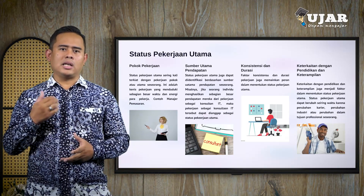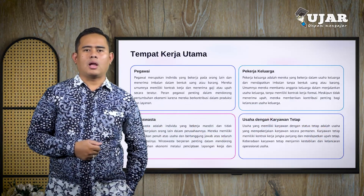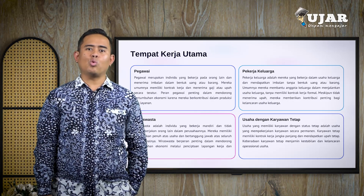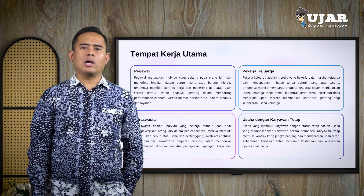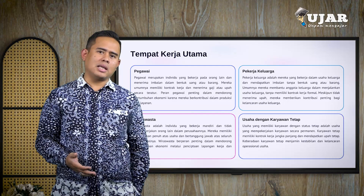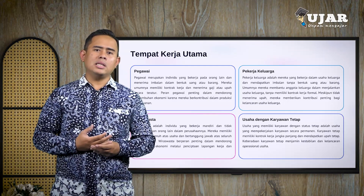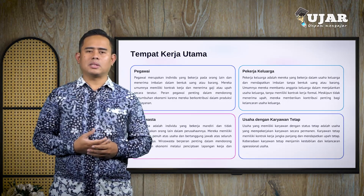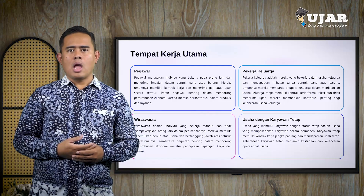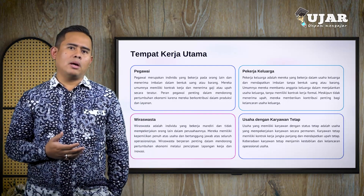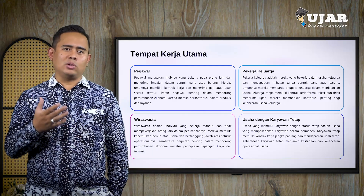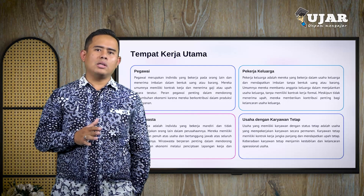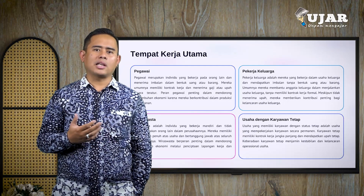Tempat kerja utama terdiri dari: pertama, seorang pegawai adalah pegawai yang bekerja pada orang lain dan dibayar dalam bentuk uang atau barang; kedua, pekerja keluarga, yaitu pekerja yang mendapat balas jasa tidak dalam bentuk uang atau barang; ketiga, bekerja dengan bantuan atau membantu anggota keluarga atau pekerja sementara; keempat, wiraswasta — jika karyawan bekerja secara mandiri dan tidak mempekerjakan orang lain; kelima, usaha yang memiliki karyawan dengan status tetap, yaitu usaha yang mempekerjakan karyawan tetap.